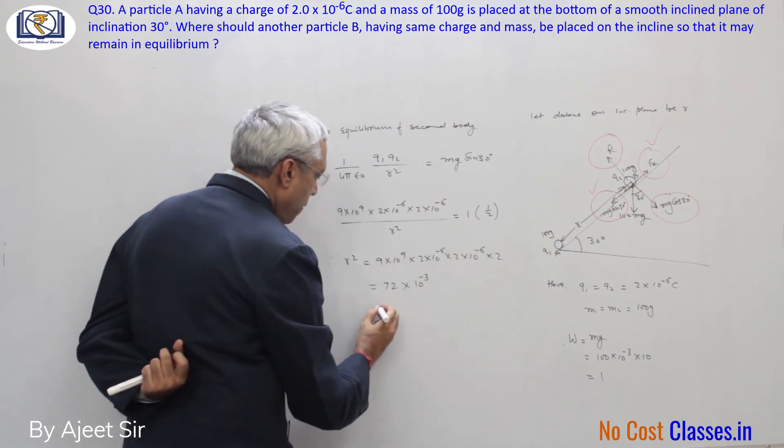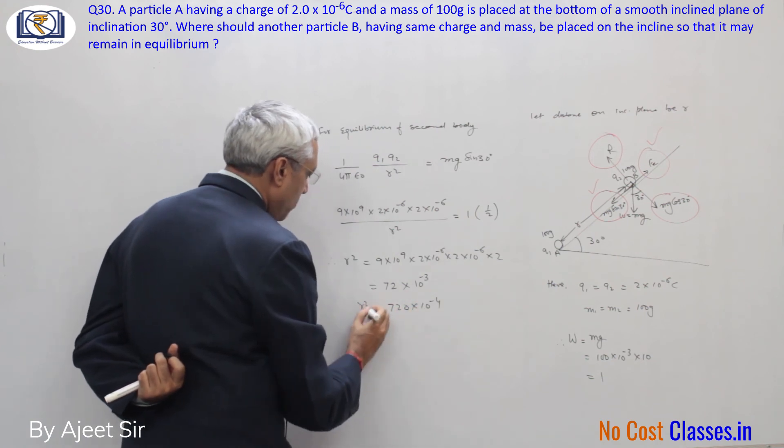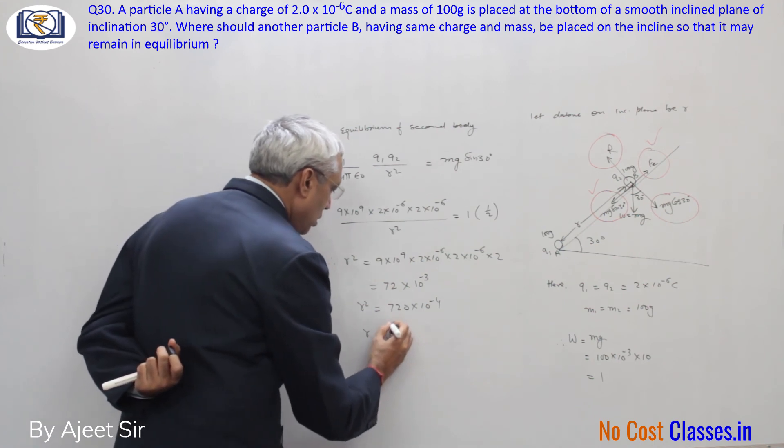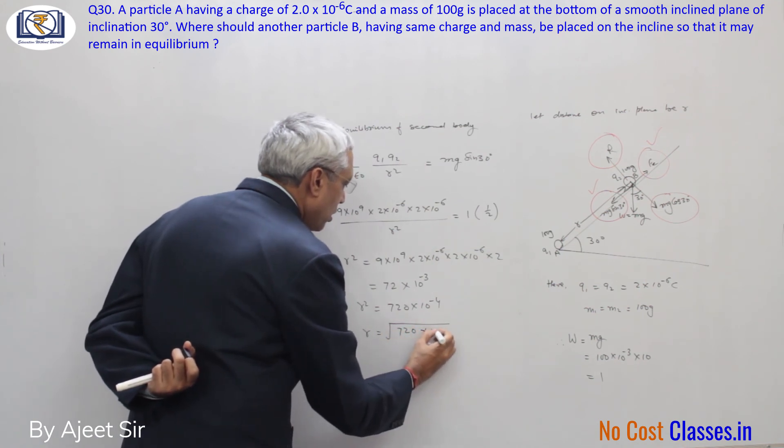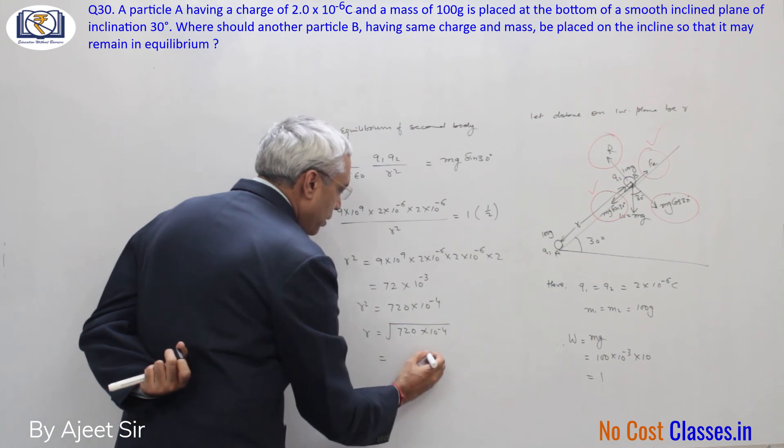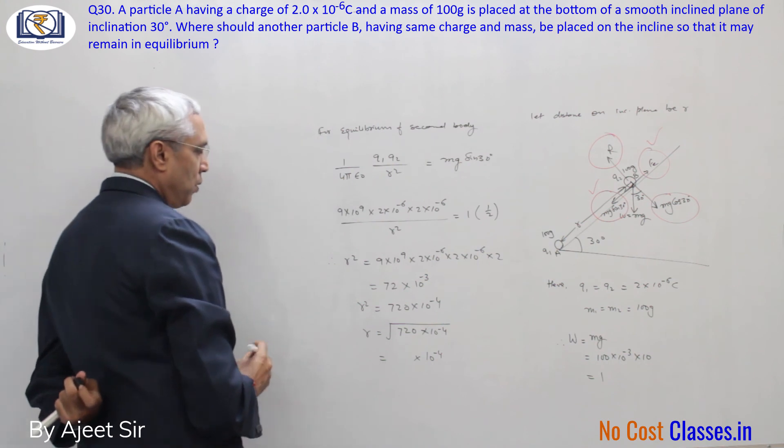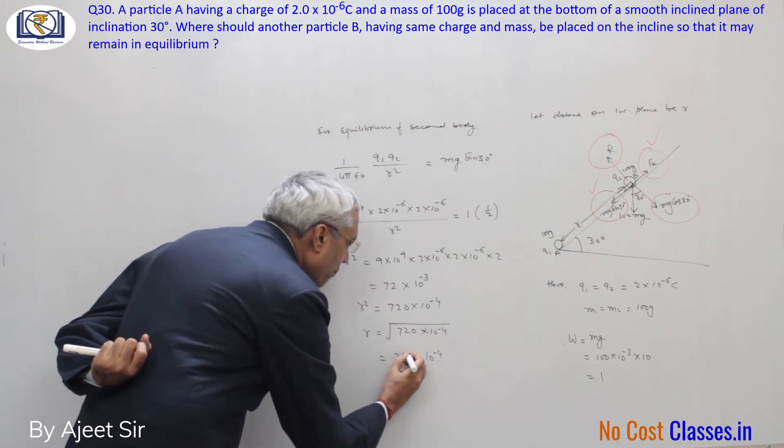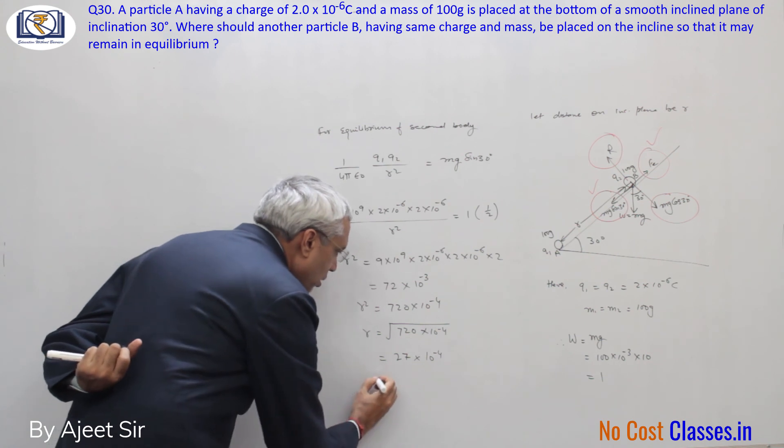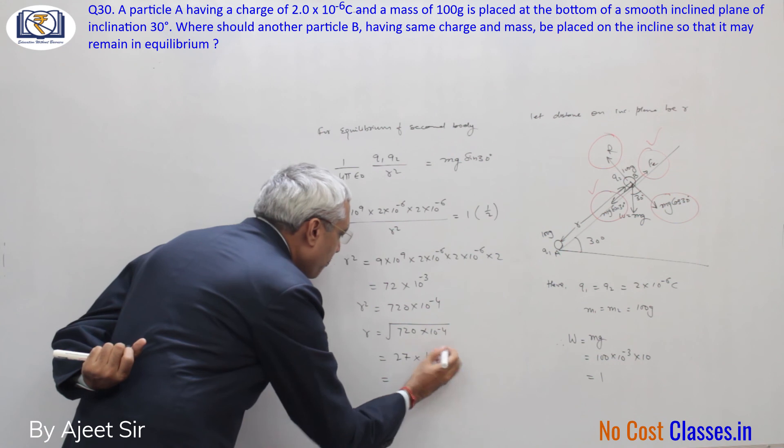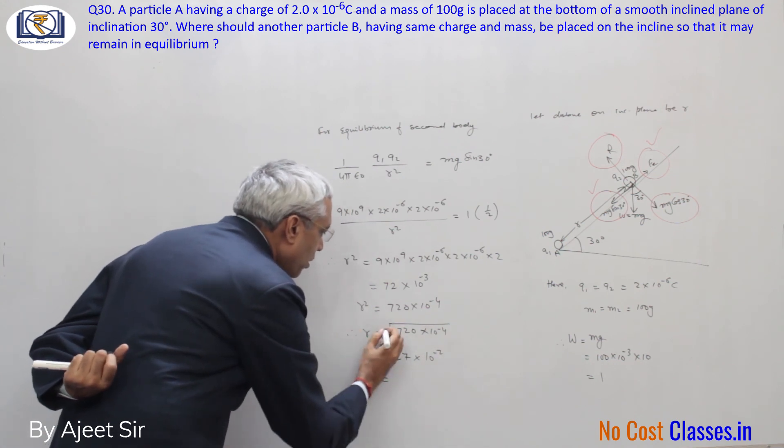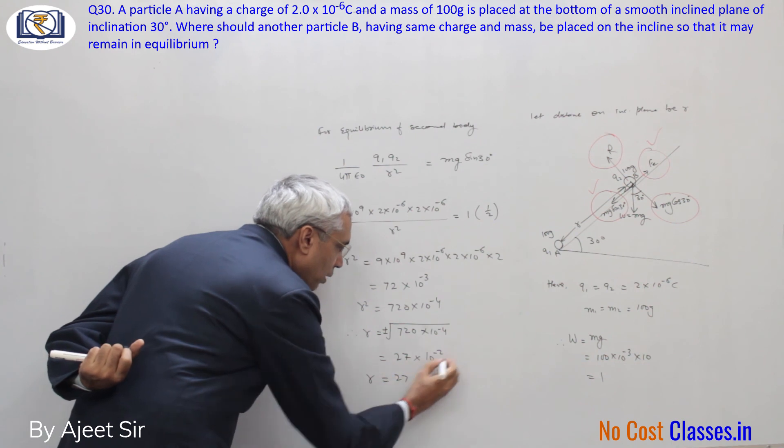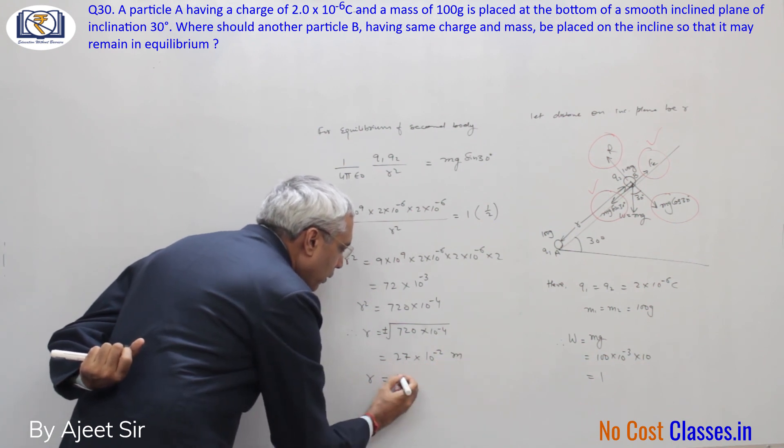This is 72 into 10 to power minus 4. r square under root, 72 into 10 to power minus 4. 10 to power minus 4 gives 10 to power minus 2. The approximate value is 0.27 meters. The distance required is 0.27 meters, which is approximately 27 centimeters.